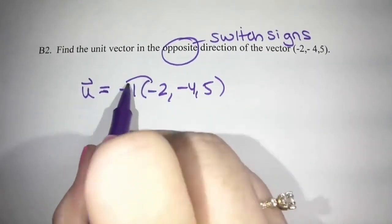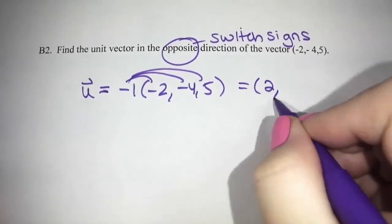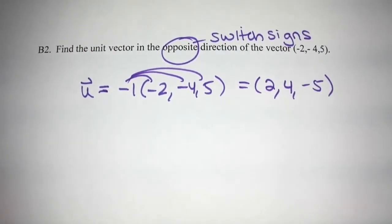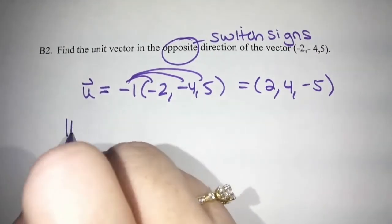And so we have negative one times each component. So it's positive two, positive four, and negative five. And then think about what you have to do. What did we do in the last example? Find a unit vector. We've taken care of the opposite direction. So we've switched the signs, and now we have to do the magnitude.